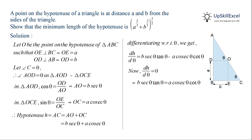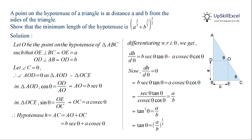Rearranging the terms and taking all the trigonometric functions on one side and A and B on the other side, we get sec theta tan theta over cosec theta cot theta equal to A over B. The sec theta over cosec theta simplifies to tan theta, and cot theta in the denominator becomes tan theta in the numerator. So we get tan cubed theta equal to A over B.